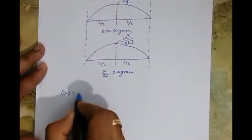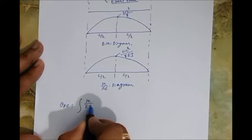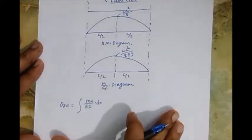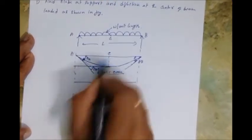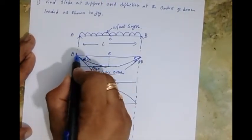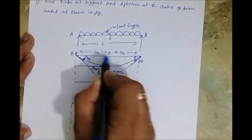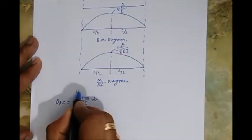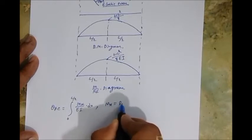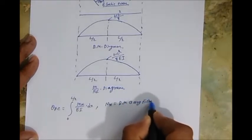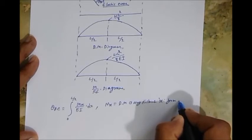As per Theorem 1, theta AC equals the integral of (M/EI) dx from A to C, which is from 0 to L/2. Now, Mx is the bending moment at any distance x from A. The integration range is 0 to L/2 since we're considering the left half of the beam.